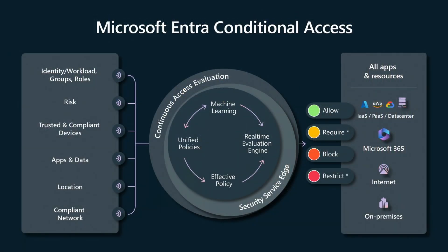By adding in a compliant network, we pick up the ability to do an amazing job of continuous access evaluation. Even for your legacy applications, we can now use the network to instantly terminate a user session if something goes wrong — the device becomes infected, you realize that user is not who you thought they were, or they go to a location they're not supposed to be in. With the combination of network and identity, we can do these amazing real-time mitigations.